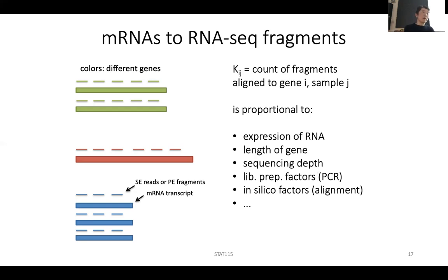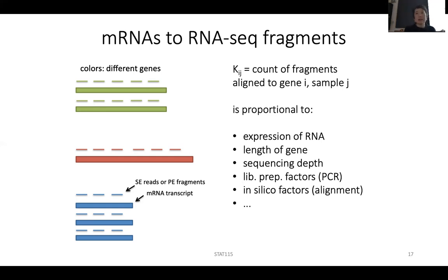Sequencing depth is related to comparing different samples. If one sample you only sequence 20 million reads and another you sequence 50 million reads, or maybe after sequence alignment one sample maps 90% of reads but the other only has 5% mappability, you may not have enough coverage on those genes. There might also be library preparation factors — for example, if you start from very little amount of RNA, like a four-cell embryo, you have to PCR-amplify your DNA a lot, and at that time there are additional biases.